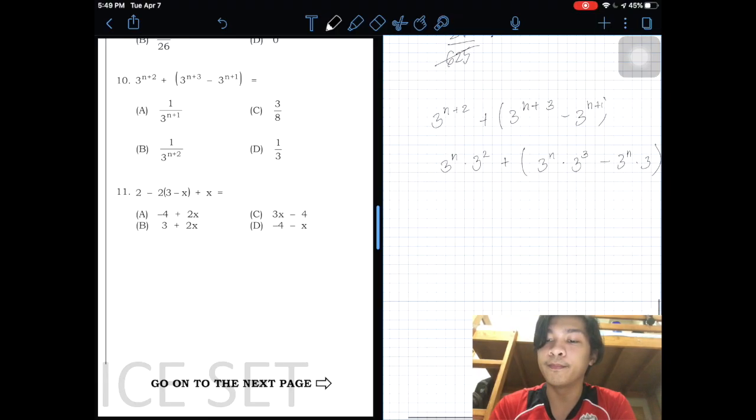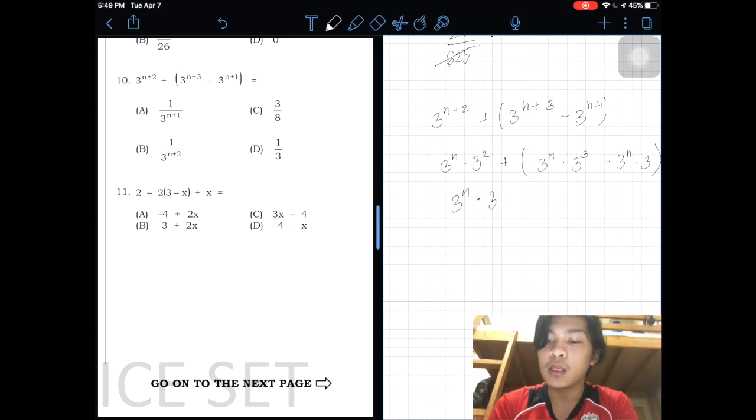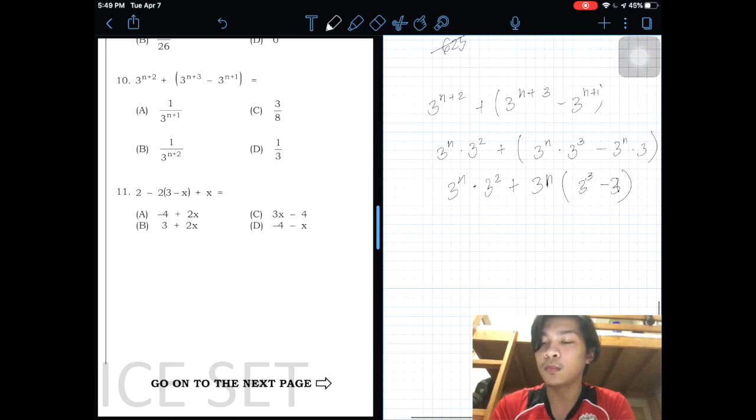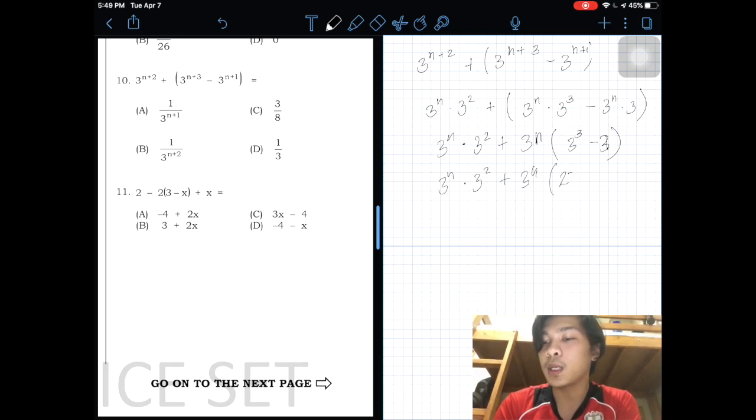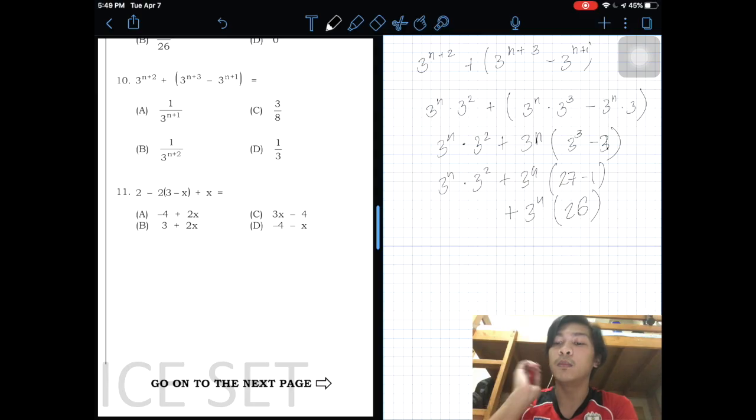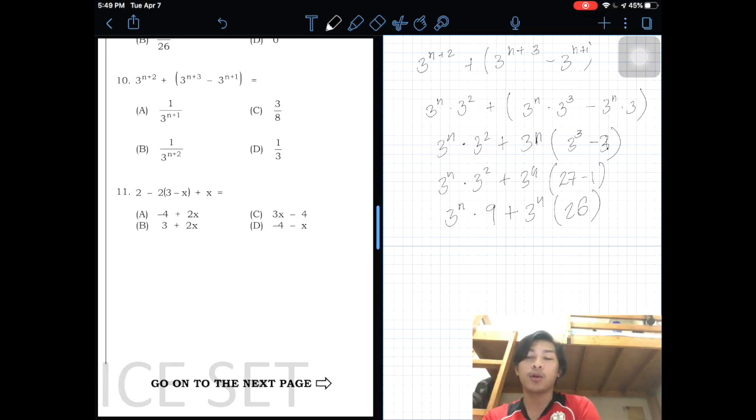Factor out 3n. So this is 3n times 9 plus 3n times 27 minus 3. You can see, this is 3n times 9 plus 3n, which is 27 minus 3, which equals 26. Then 3n plus will be 3n times 9. You can factor out 3n. The problem is this shouldn't be plus. This should be divide.